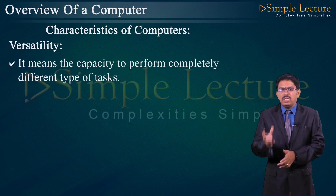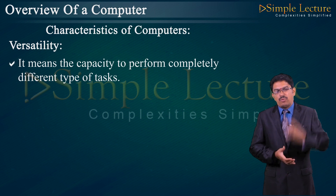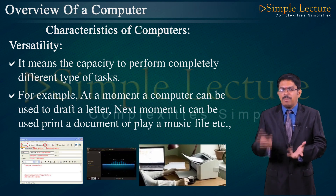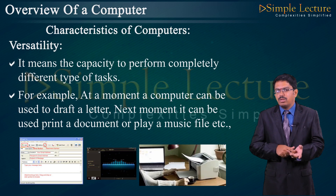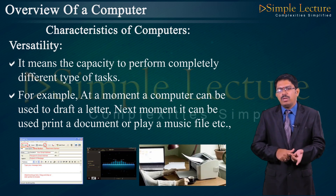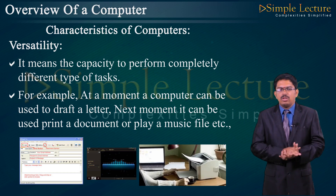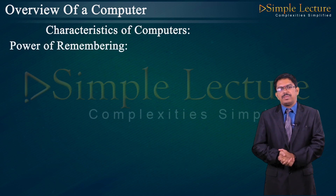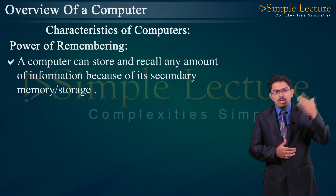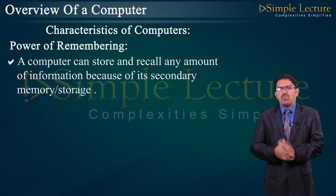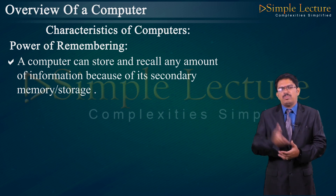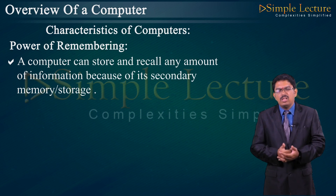A computer can work for hours without creating any error. If millions of calculations are to be performed, a computer will perform every calculation with the same accuracy, overpowering human beings in routine work. Versatility means the capacity to perform completely different types of tasks simultaneously — for example, at one moment drafting a letter, next printing a document, or playing music. Power of remembering: a computer can store and recall any amount of information due to its secondary memory storage.